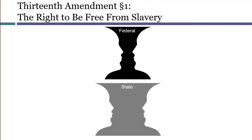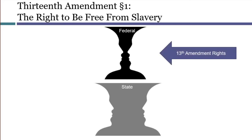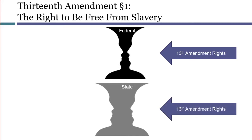For example, the federal government has an enumerated power to make laws for the territories, but the 13th Amendment would not allow that power to be used in a way that authorized slavery in the territories. This limitation on the federal government was more theoretical than real, since laws authorizing slavery had all been promulgated at the state level using state sovereign powers. The 13th Amendment, by saying that slavery shall not exist, limited that state power.